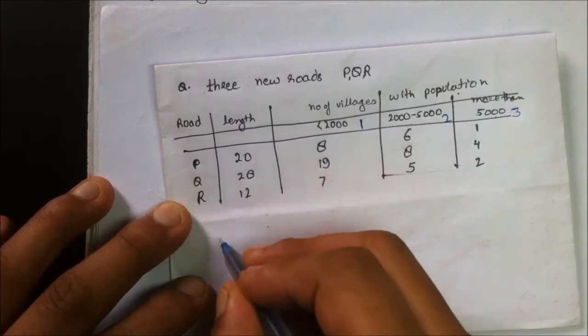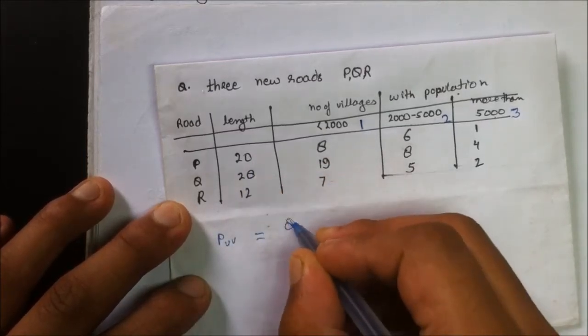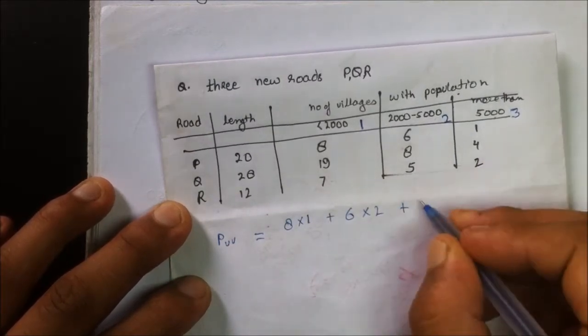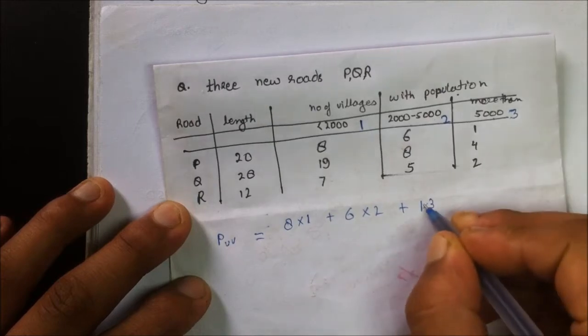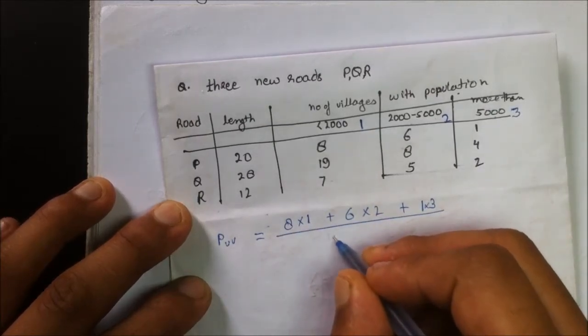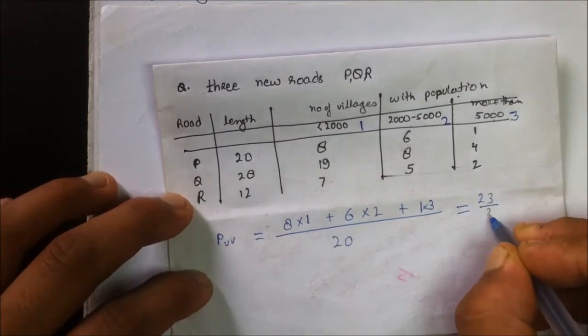According to this question, the utility value of P will be equal to 8 times 1 plus 6 times 2 plus 1 times 3, divided by the length of the road which is 20. Coming up to the solution: 23 by 20.